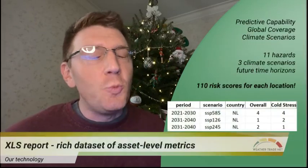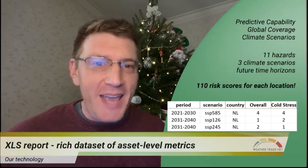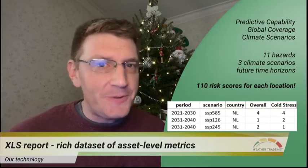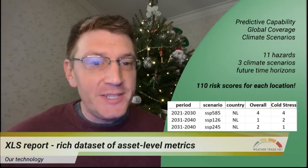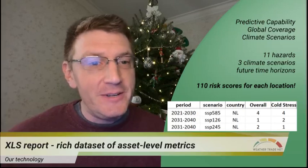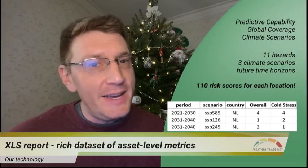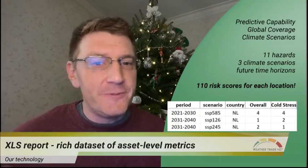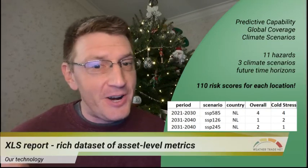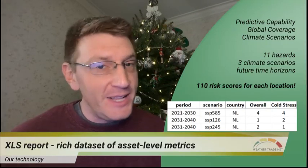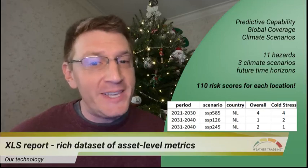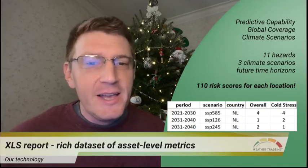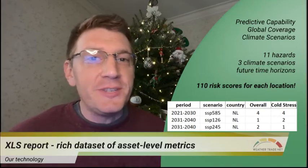You collect 110 risk scores for each location. You get 11 hazards for the present-day reference period and 99 risk scores for three future time horizons, three climate scenarios across 11 risk hazards. Excel metrics match our risk scoring.